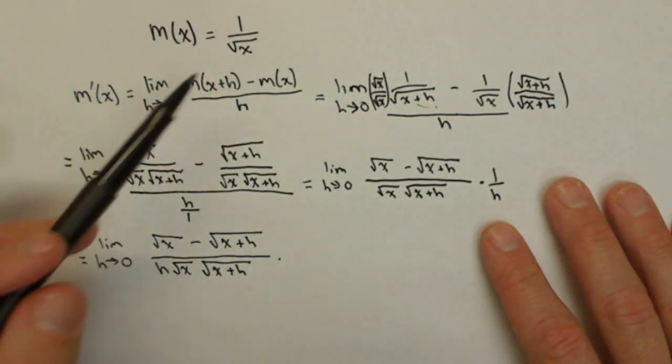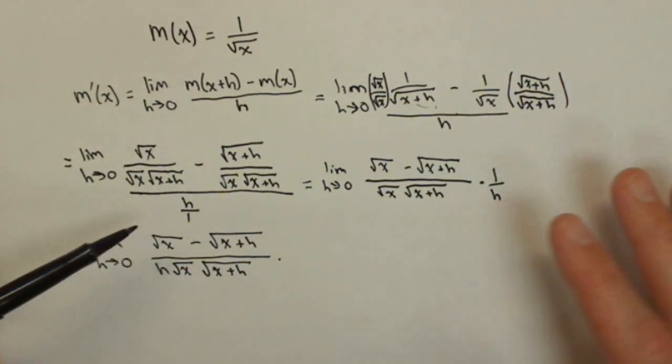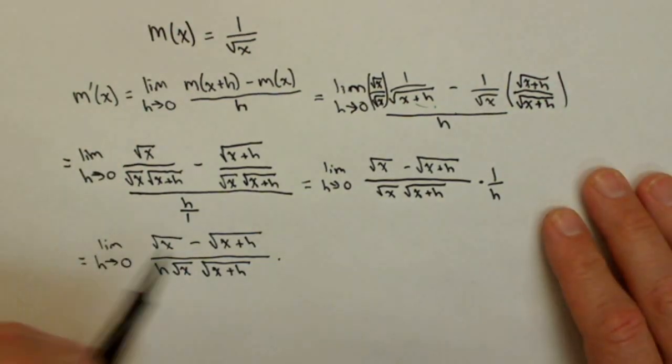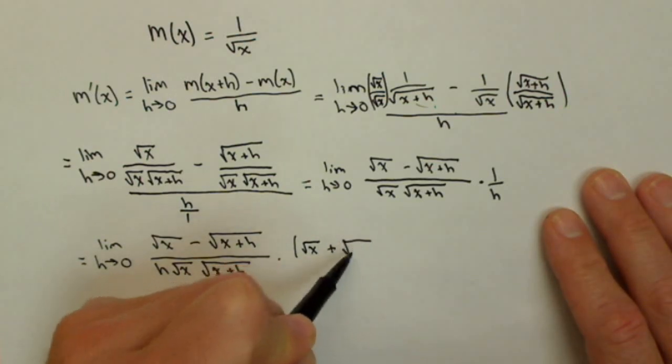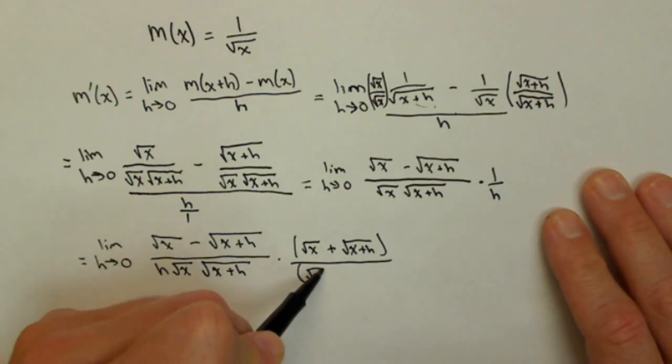Now, if you've taken the derivative of just square root of x, one of the things you had to do was multiply by the conjugate, which is the same thing we're going to do here. We're going to multiply the top and bottom by square root of x plus square root of x plus h, on top and bottom.